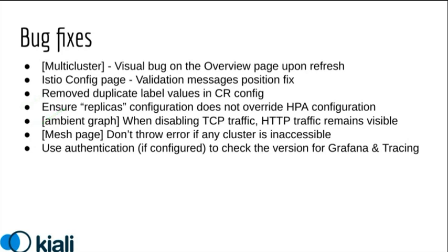More ambient work — this is the bug that John Howard actually found: when he disabled the TCP traffic in the graph, it was also hiding the HTTP traffic. We fixed that bug; if you disable the TCP traffic view in the graph, the HTTP traffic is still visible.